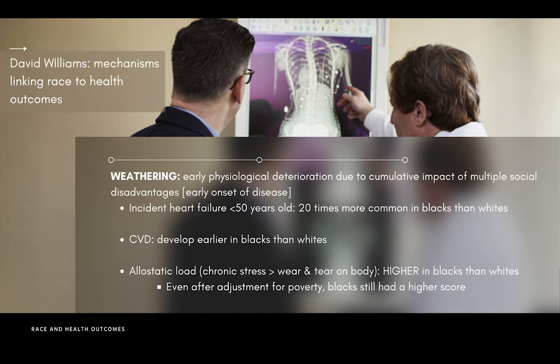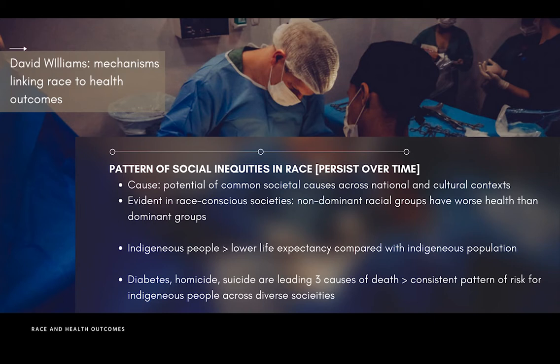David Williams also explained how this social inequality persists over time. Through a longitudinal dataset in race-conscious societies like Australia and Canada, non-dominant racial groups have worse health outcomes than dominant groups. In Indigenous communities, they have lower life expectancy compared to the majority. Diabetes, homicide, and suicide are the top three leading causes of death — a consistent pattern of risk for Indigenous people across society.